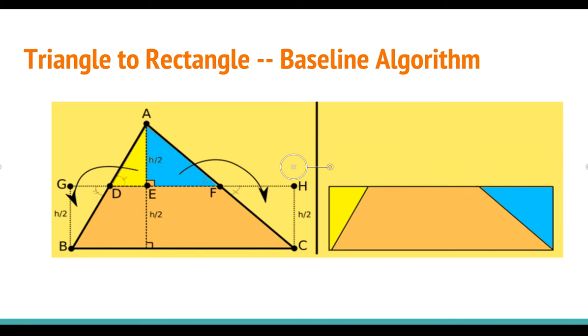Then make two perpendicular lines perpendicular to BC. One starts from B and the other starts from C. These three lines intersect at point G and H, and the rectangle GHCB is our resulting rectangle.